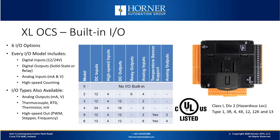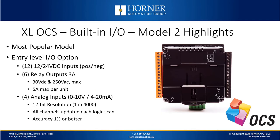Let's talk about the built-in IO in the XL series. There are 6 IO options. Similar to the Micro series, all the standard signals are available: digital in, digital out, relay out, analog in, and analog out. But not every model has analog out or supports temperature sensors on the analog input side. Let's start with our most popular model, the Model 2 — our entry-level option. It has 12 digital inputs with positive and negative logic, 6 non-isolated relay outputs, and 4 analog inputs. The relays are rated up to 30 volts DC and up to 250 volts AC, at 3 amps max per point but no more than 5 amps per unit. The analog inputs are jumper configurable between 0 to 10 volts and 4 to 20 milliamps, with 12-bit resolution. All channels are updated with each logic scan — the analog is fast on this unit, giving a new conversion value every scan.